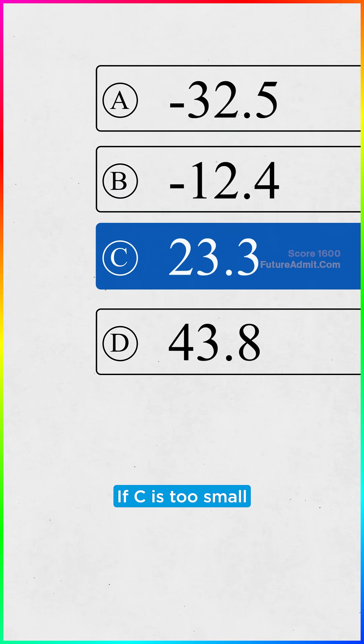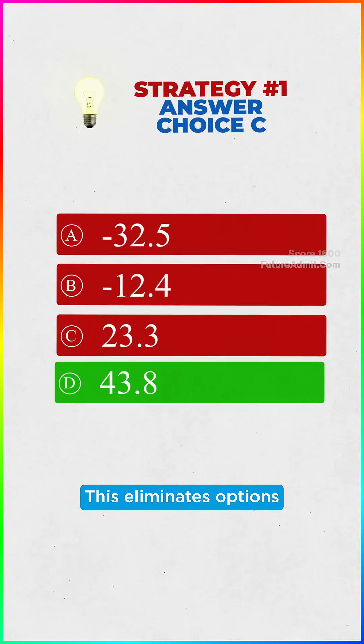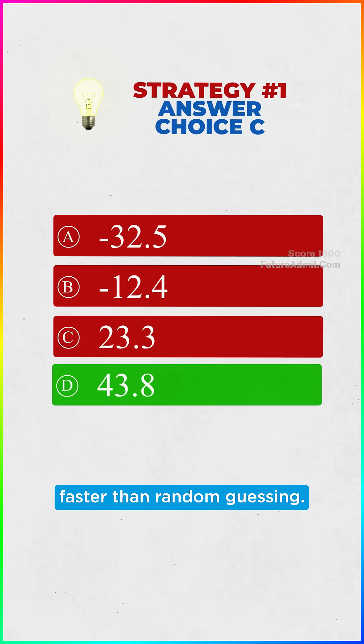If C is too small, then you know answer choice D must be correct. This eliminates options faster than random guessing.